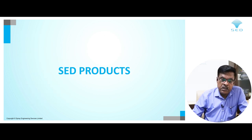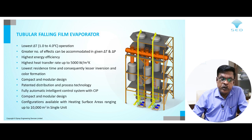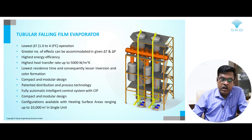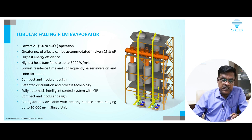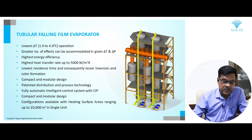Coming back to the tubular falling film evaporator: SCD offers very low delta T operation of one to four degrees, which is very achievable in their evaporators. A greater number of effects can be accommodated to give delta T and delta P. They offer the highest energy efficiency, with heat transfer rates up to 5,000 watts per meter squared per degree Kelvin. The design is compact and modular, with a very good NCG withdrawal system to keep heating surfaces effective and ensure high heat transfer coefficients. Configurations are available with heating surface areas ranging up to 10,000 square meters in a single unit.